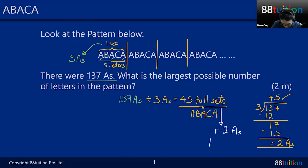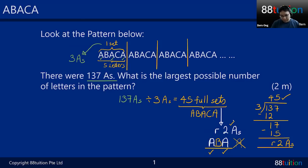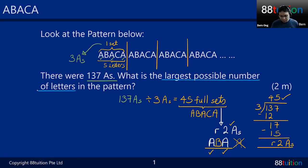After the 45 full sets, we have two remaining A's. So the next portion starts: A, B, A... The two A's appear here and here, but can we have another A at the back to form a full abaca? No, we cannot — because there are only two remaining A's, and we are missing the third A.